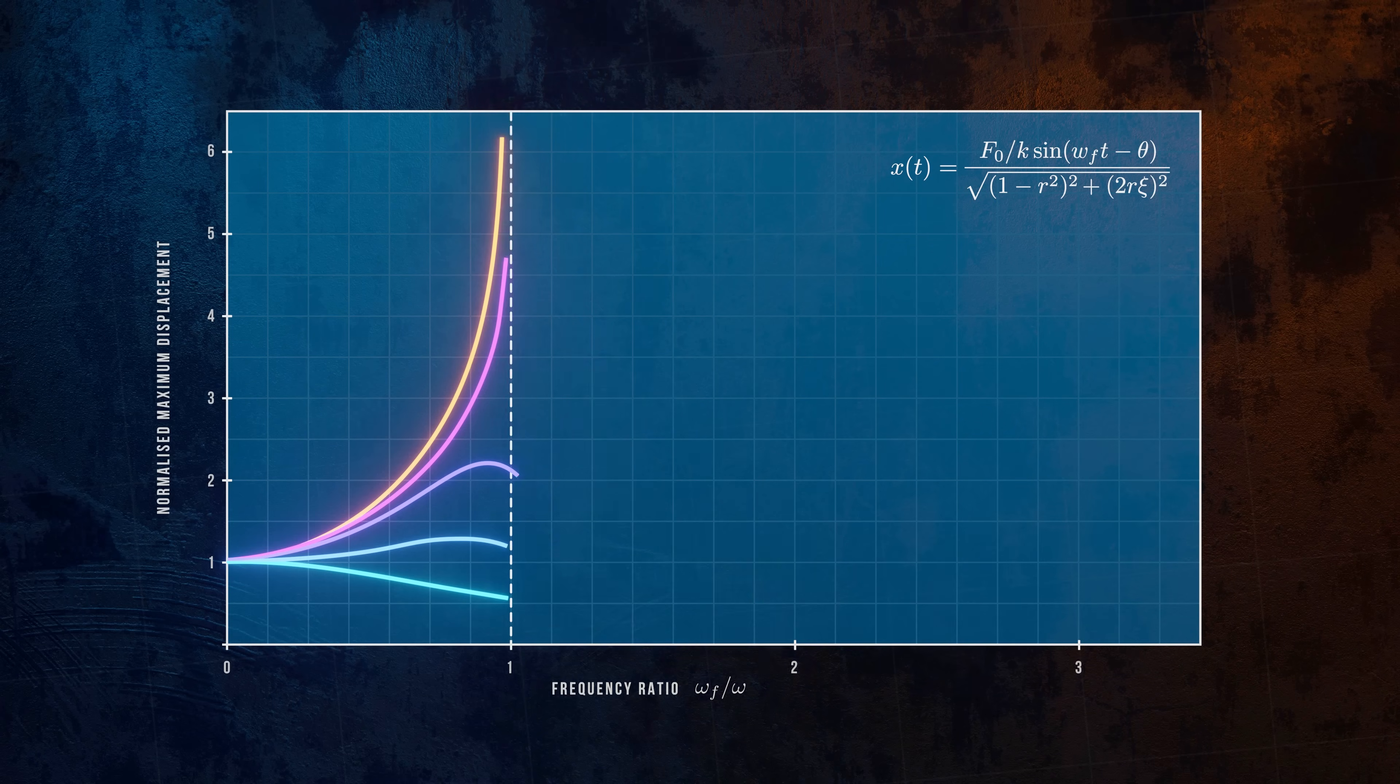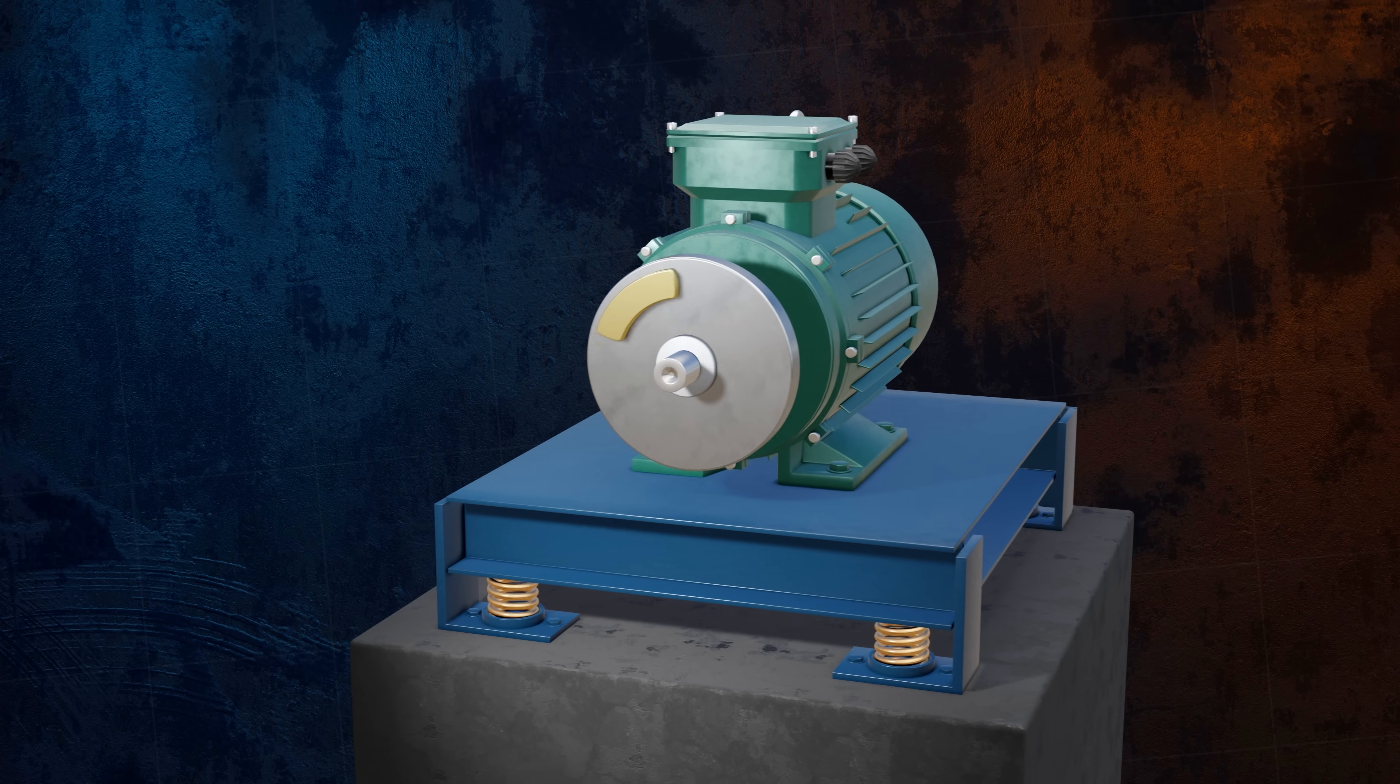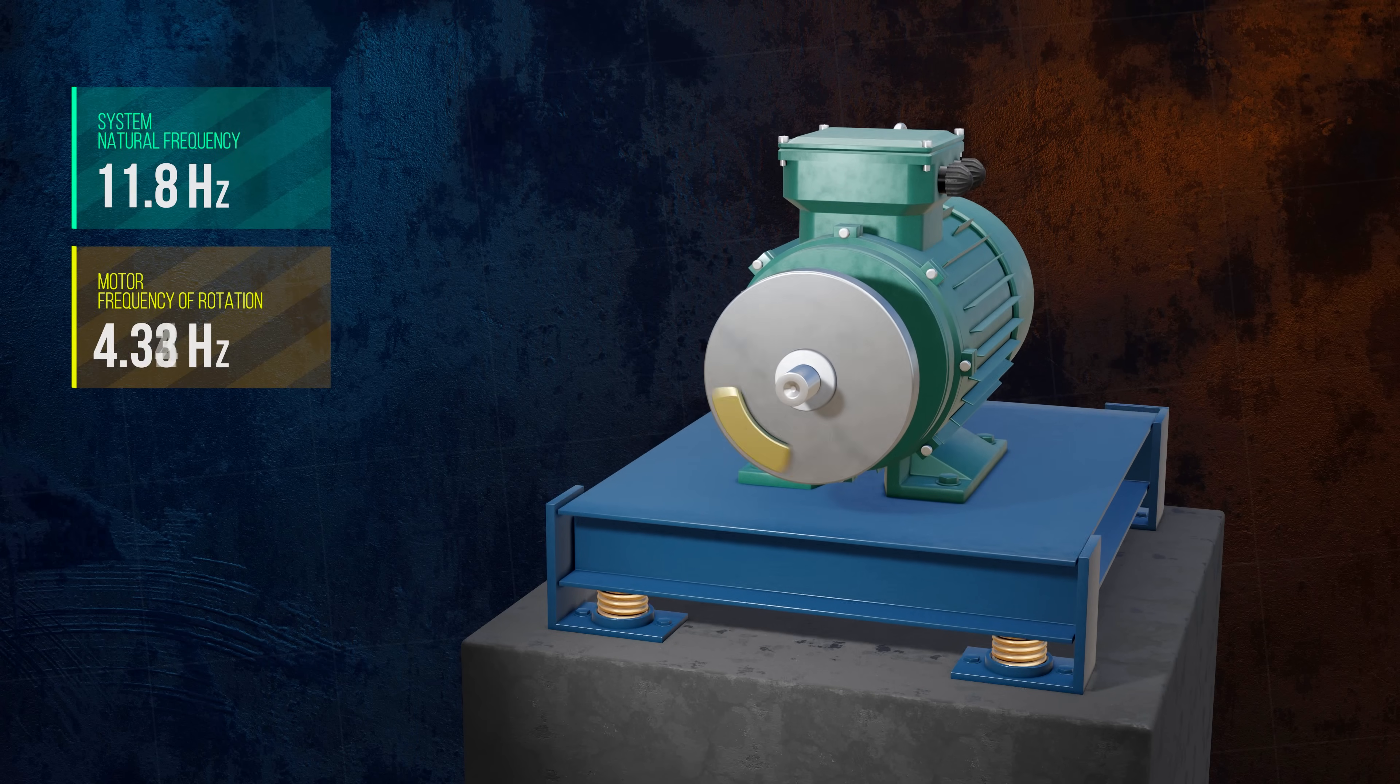We can see this effect if we adjust the speed of the unbalanced motor. As the frequency of the force caused by the eccentric mass approaches the natural frequency of the system, the displacements become very large.